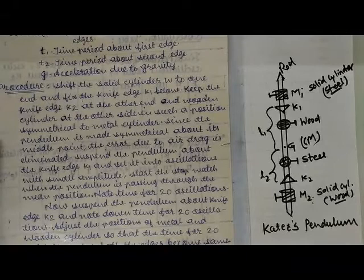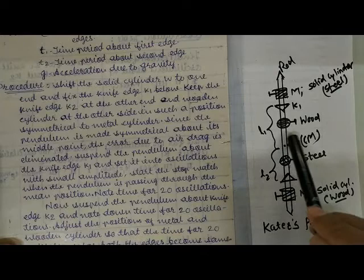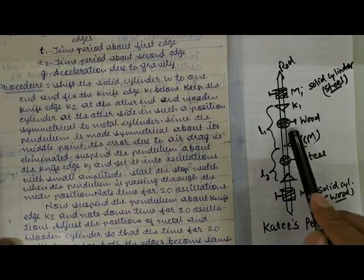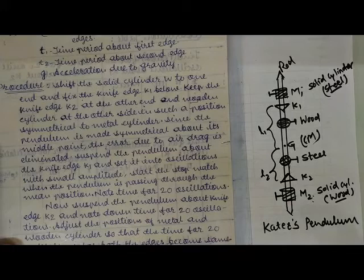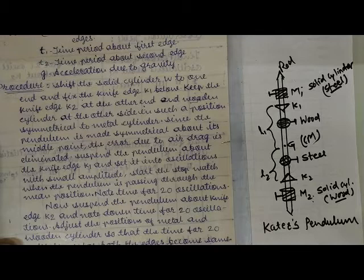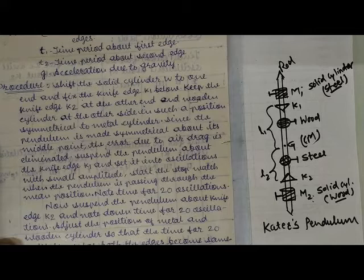In the procedure, we first check whether the Kater's pendulum is well calibrated. To do this, we take 20 oscillations about both knife edges — about K1 and about K2. Attach the pendulum on knife edge K1, set it into oscillations, start the stopwatch, and count the 20 oscillations — you can use either the mean position or the extreme point as a reference. The oscillations here are vertical, so we can measure with the naked eye and do not require a telescope.